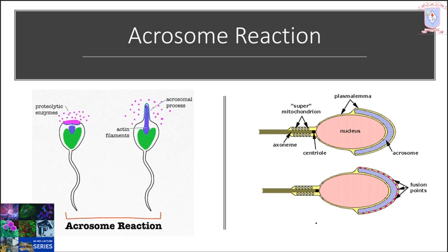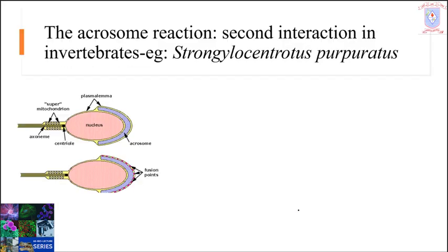Close to 100 sperm activating peptides, or SAPs, have been identified from sea urchins only, and a few have been structurally characterized in other species. In general, all SAPs produce similar biological effects on spermatozoa, and they are believed to have a chemoattraction function — in some cases attracting the sperm to the egg and accelerating sperm penetration through the jelly coat of the egg and promoting acrosomal reaction.